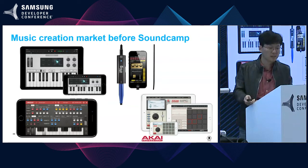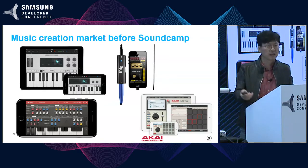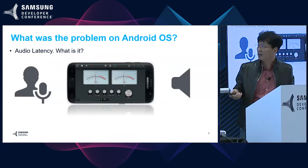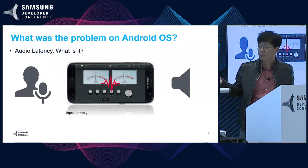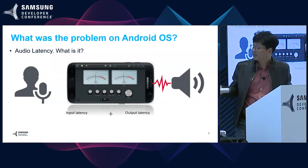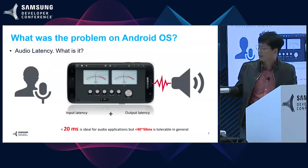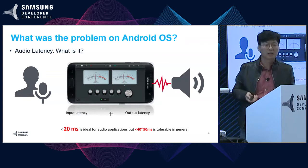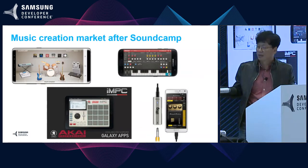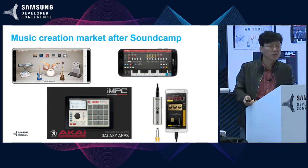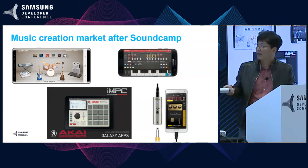There was a fundamental problem in all Android versions: it was audio latency. Audio latency means the timing gap between microphone input to speaker output, including the processing time on the device. Under 20 milliseconds is ideal for music applications, but under 40 to 50 is tolerable. The old Android OS had a longer latency than this. So Samsung developed Samsung Professional Audio to overcome this problem in 2014, and finally we got the solution.